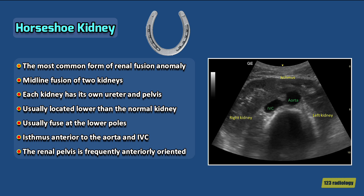Horseshoe kidney is the most common form of renal fusion anomaly. It occurs in one in every 400 people. It is the midline fusion of the two kidneys. Each kidney has its own ureter and pelvis. The two kidneys typically fuse at the lower poles.